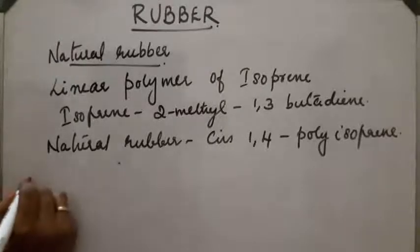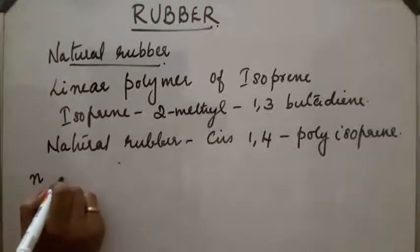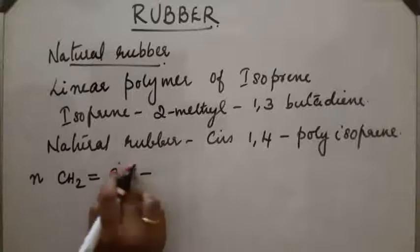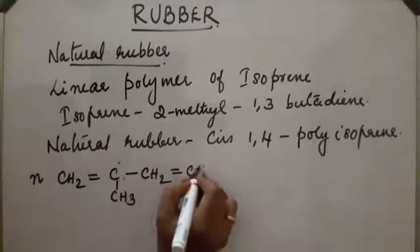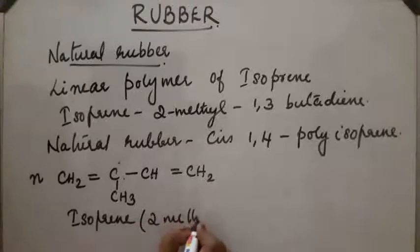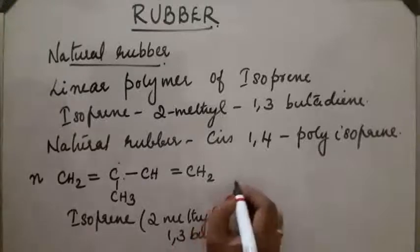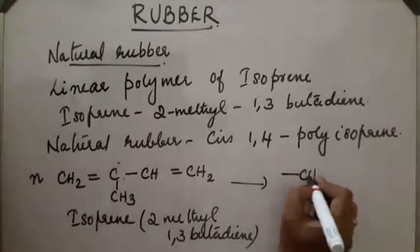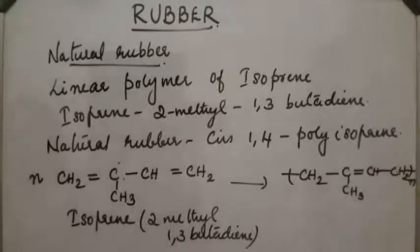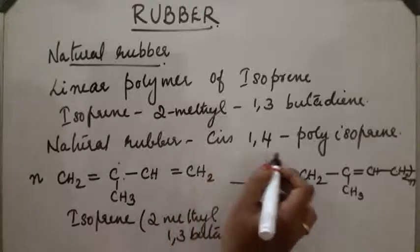Isoprene is 2-methyl-1,3-butadiene (CH2=C(CH3)-CH=CH2). When isoprene polymerizes, the bond shifts and the units link together to form a chain: -[CH2-C(CH3)=CH-CH2]n-. This chain compound is the linear polymer called natural rubber, which is cis-1,4 polyisoprene.